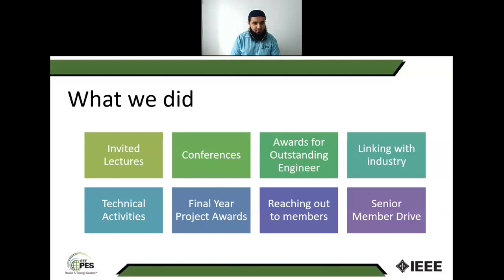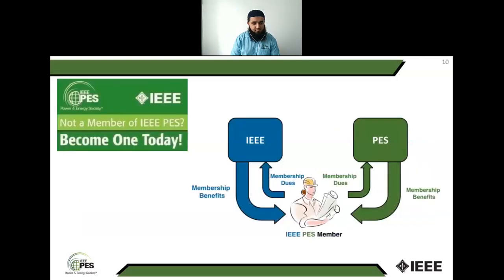If you are a student you are a student member. If you are a postgraduate student you can become a graduate student member. Among members there are senior members and fellows. To join, first you have to become an IEEE member, and then additionally you join the Power and Energy Society.